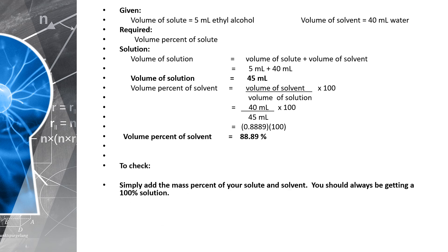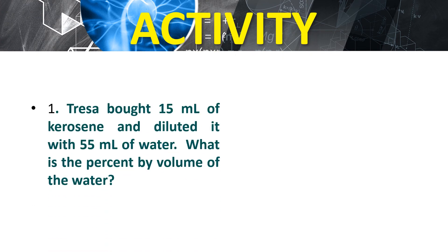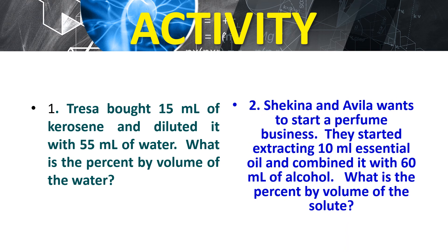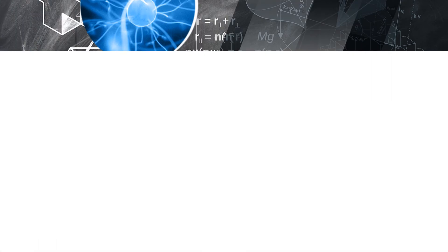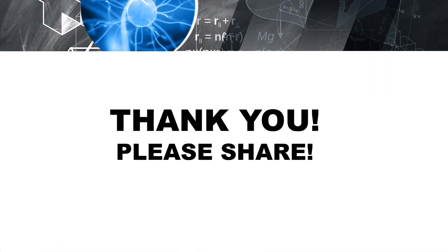To check: add the percent of solute and percent of solvent — 11.11% plus 88.89% equals 100%, which confirms our answers are correct. Now it's your turn to answer the activity. Get a piece of paper and answer the two problems; we'll check them later. Thank you, and please share.